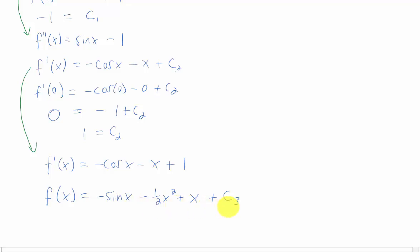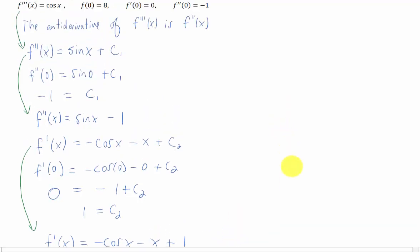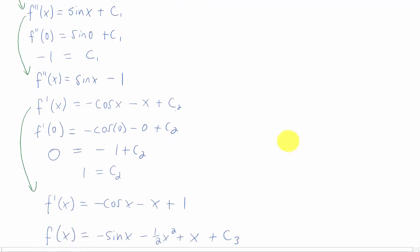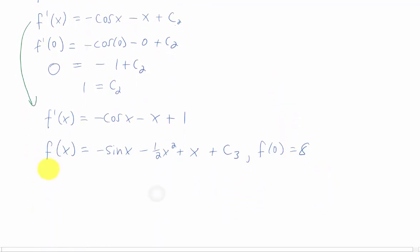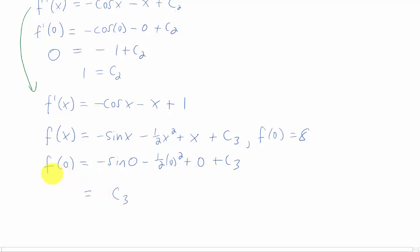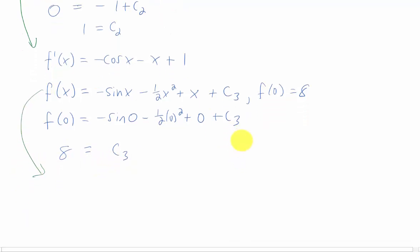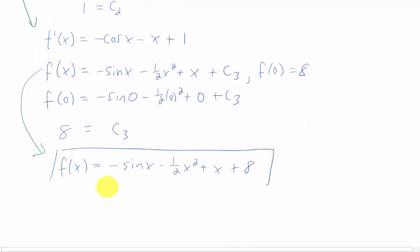So we have our final function right here. We just need to figure out what c3 is, and we're going to use the initial condition f of 0 equals 8. If we plug x equals 0 into this function, we get sine of 0 minus 0 plus 0. We just get c3, and we know that this f of 0 has to be 8, so that means c3 equals 8. Now, our final answer for our function is this big, long thing right here. I'm going to back off of this thing so we can see it all at once.